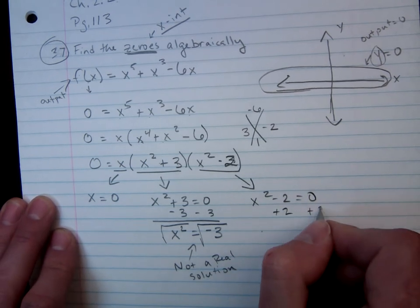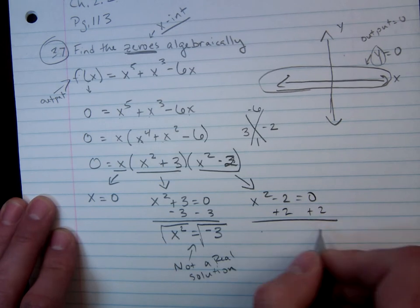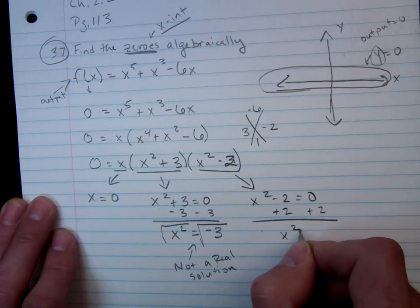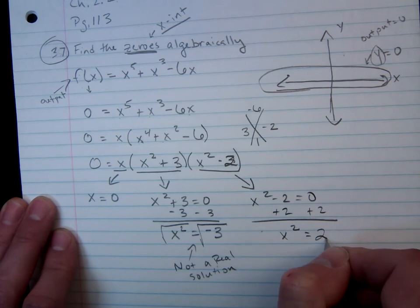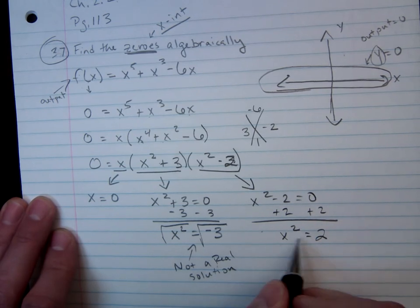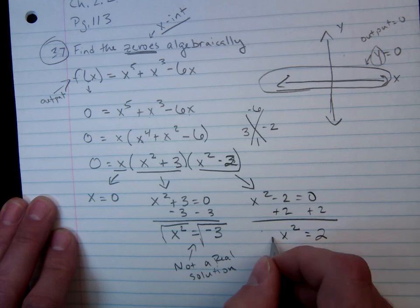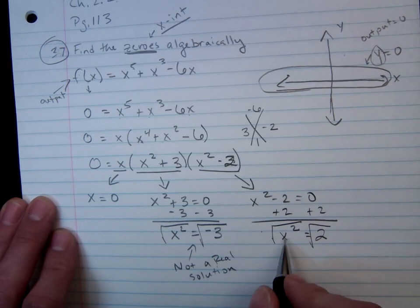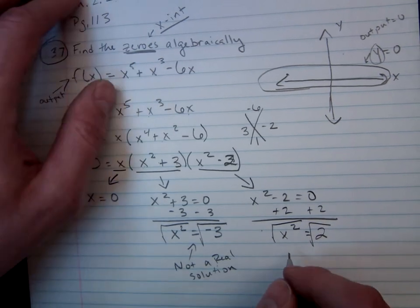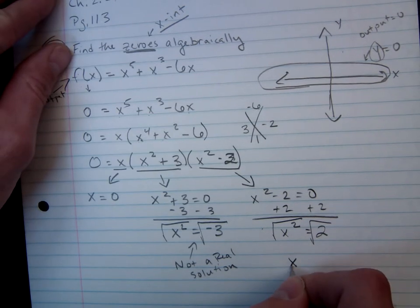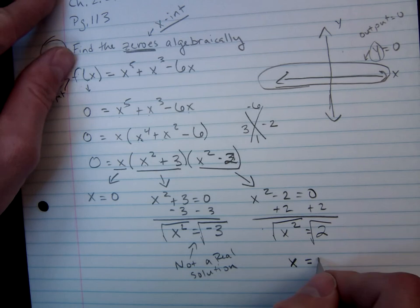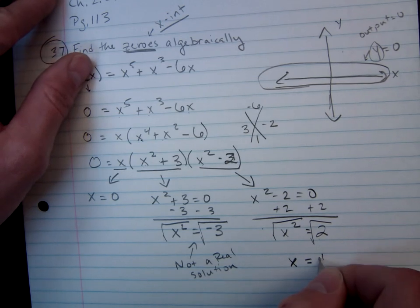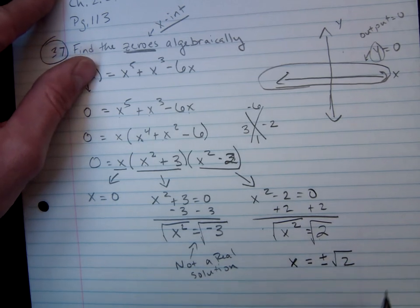I move over here, and I can feel pretty confident that this is going to end up working. I get x squared is equal to 2. Take the square root of both sides, keeping in mind here that I get that x is equal to not just the square root of 2, but plus or minus the square root of 2.